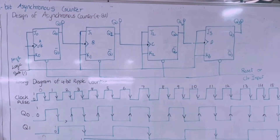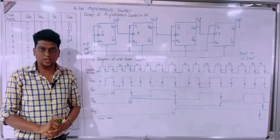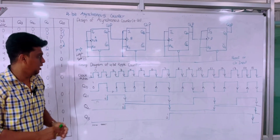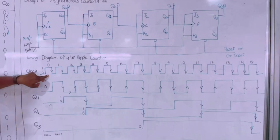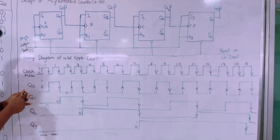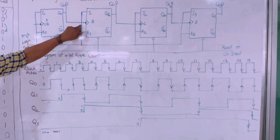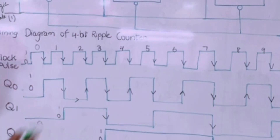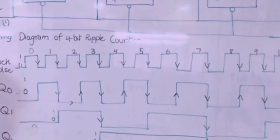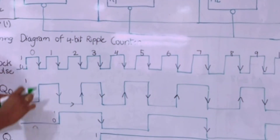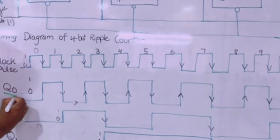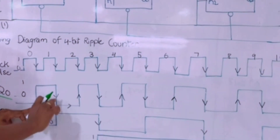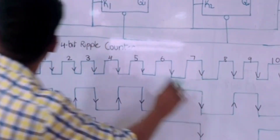The other name for the asynchronous counter is ripple counter, also called a binary ripple counter — these are all the same. In this 4-bit ripple counter, a clock pulse is applied and it counts from 0 to 15. We are using negative edge triggering, meaning the falling edge triggers each flip-flop. The rising edge and falling edge are labeled accordingly as the clock pulses are applied from 0 to 15.